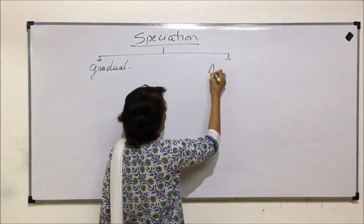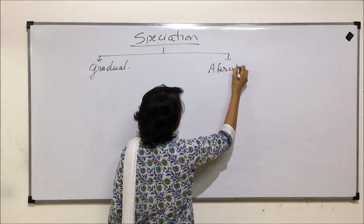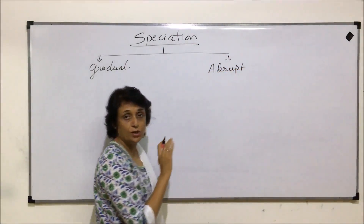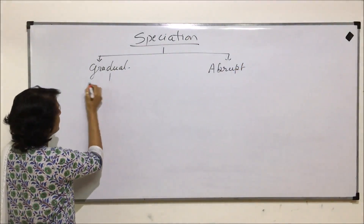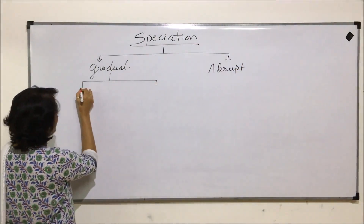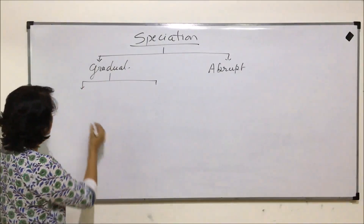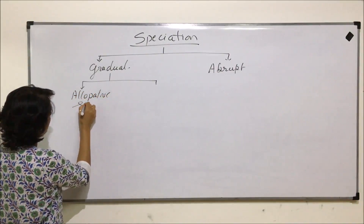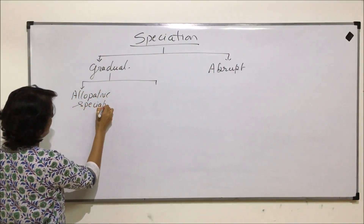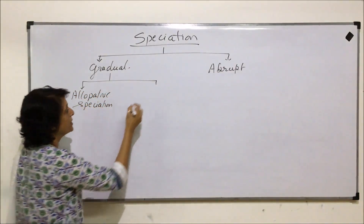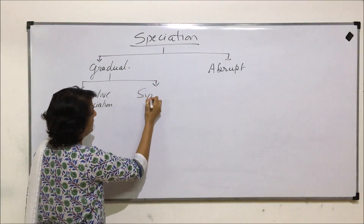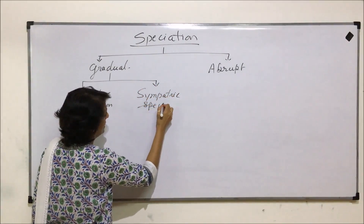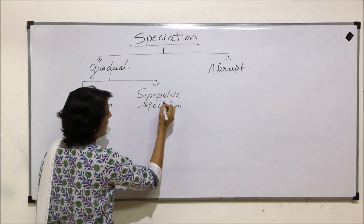The second type of speciation is known as abrupt or sudden change, which is normally due to mutation. Gradual speciation takes place again by two means: one is known as allopatric speciation and the second one is known as sympatric speciation.